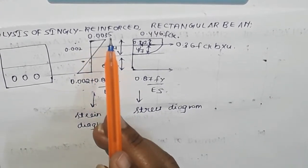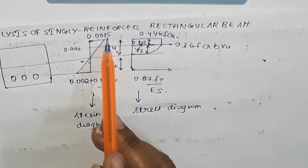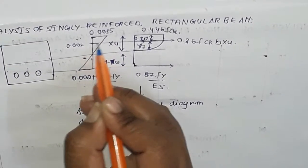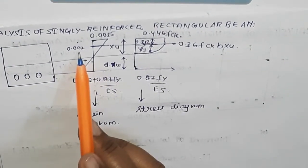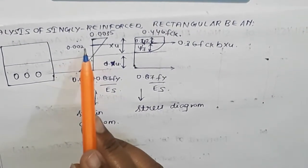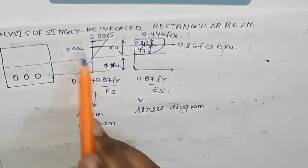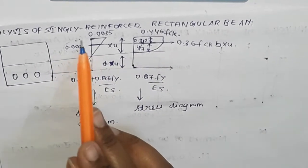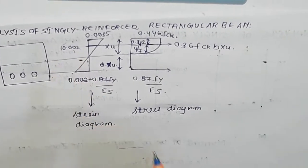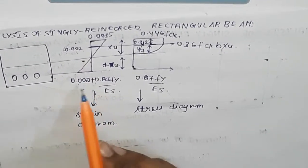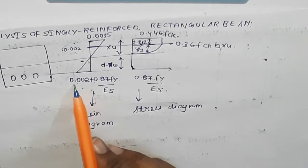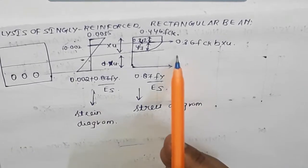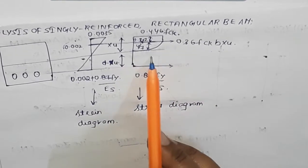We have seen that 0.0035 represents the ultimate strain in concrete. This is the characteristic strain — up to this point the concrete curve is going to be parabolic, and thereafter it is going to be linear. This represents the parabolic strain of concrete. For the strain in steel, for HYSD bars, we consider it as 0.002 plus 0.0035 × FY by ES. This shows the stress diagram for the beam.